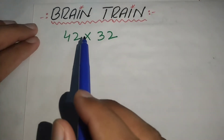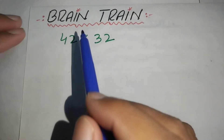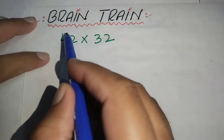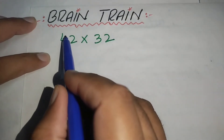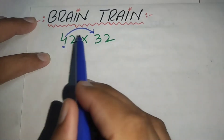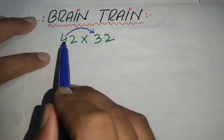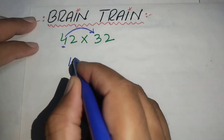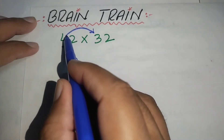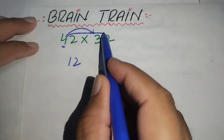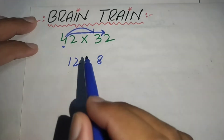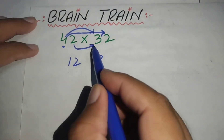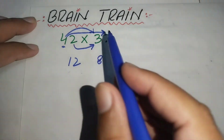We multiply 42 by 32. First, we fix the number 4 and multiply 4 by 3 — we get 12 — and then we multiply 4 by 2 — we get 8. After that we multiply 2 by 3 and we get 6.